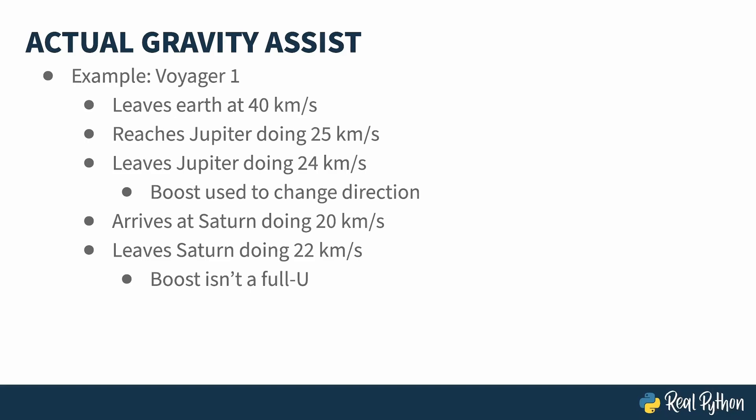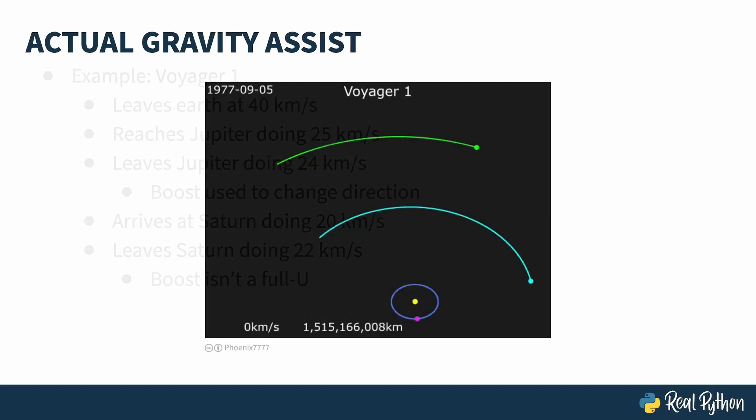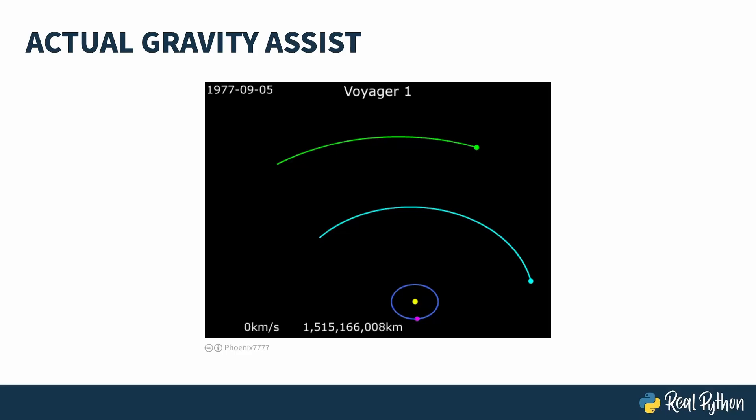And thanks to user phoenix7777, you can visualize all that. The values at the bottom of this show the velocity and the absolute distance to the target, which is Saturn. Because the distance is absolute, the number shrinks as it approaches Saturn, but then increases once it passes the planet.